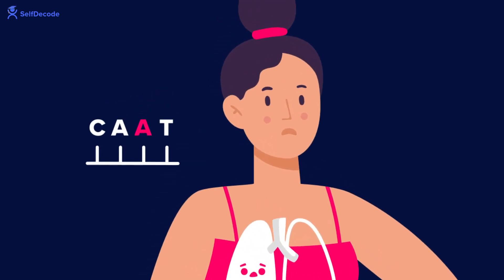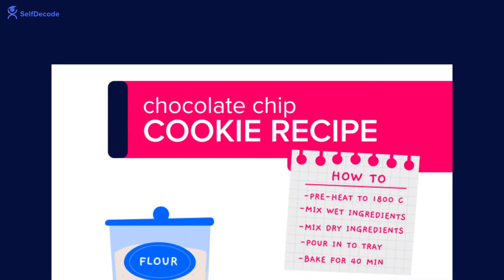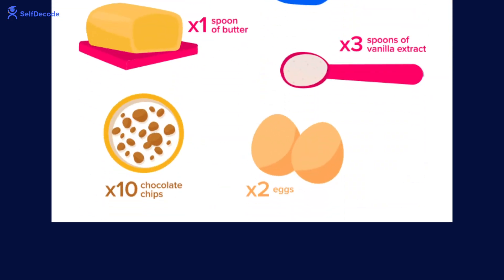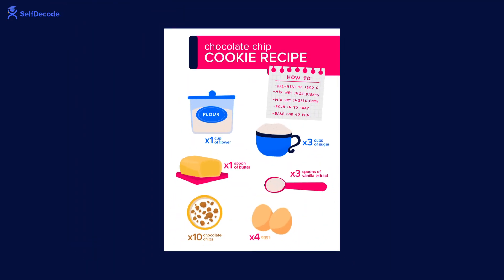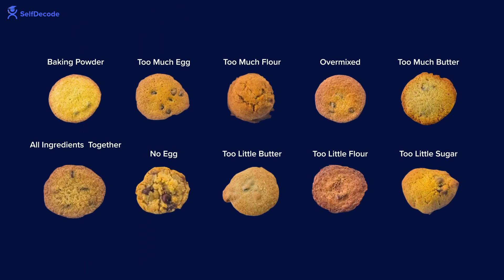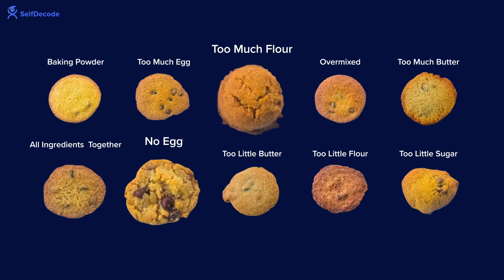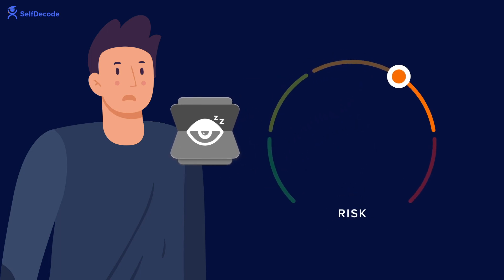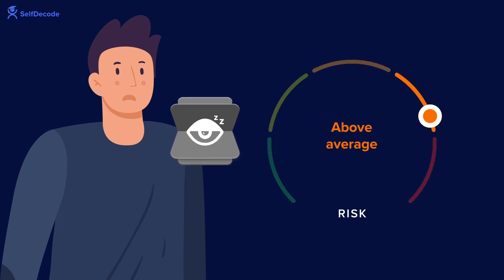How can one small change have such a big impact? Think of a change to a gene like a typo in a chocolate chip cookie recipe. One change to the recipe can throw it off, making a very unusual batch of cookies — for example, adding too much flour makes a fluffy cookie, or forgetting the eggs can change the cookie texture.